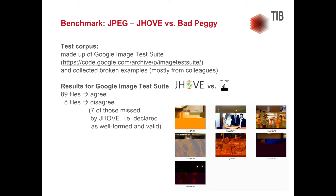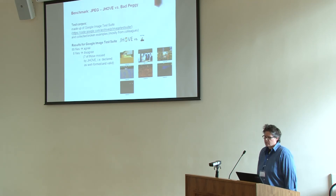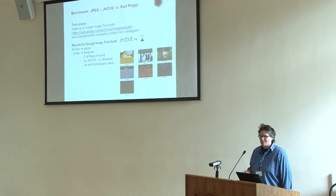Similarly for JPEG, we again used the Google Image Test Suite, and Yvonne collected an impressive 2,800 test objects from colleagues — just by asking for broken JPEG files on their computers. From around 1,980–1,997 files run against both tools, they agreed on 89 files. But they disagreed on eight, and on seven of those, JOV missed the problem — declaring them well-formed and valid while Bad Peggy said something was wrong. The images are shown; you can decide whether they were intended to look that way or whether the files were damaged.